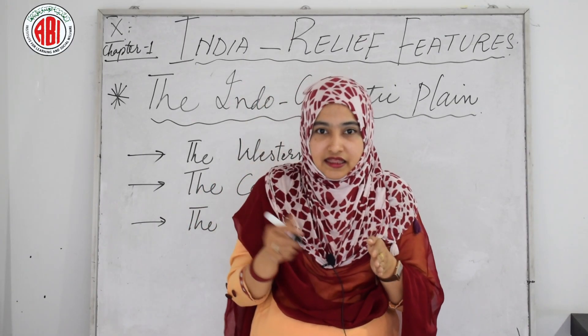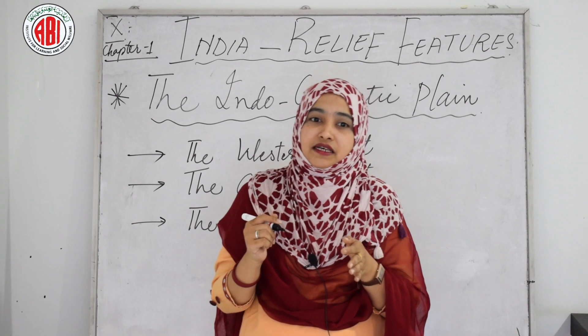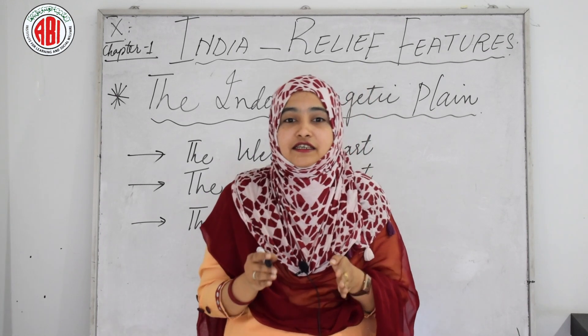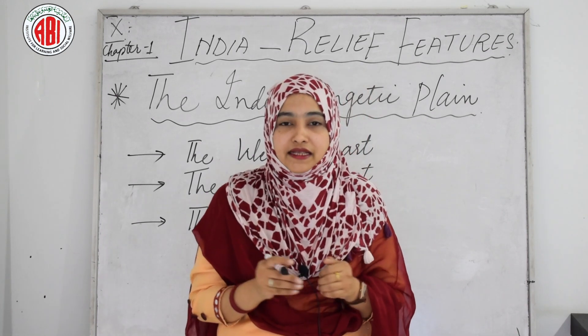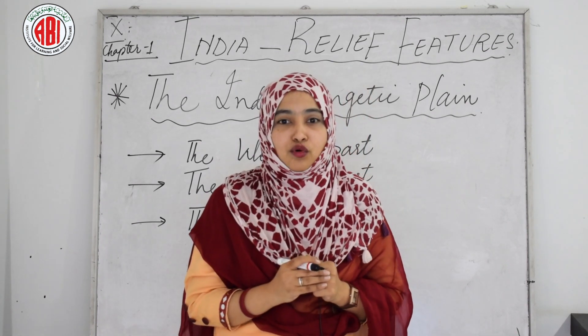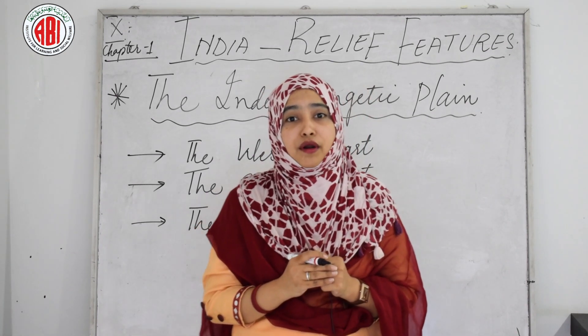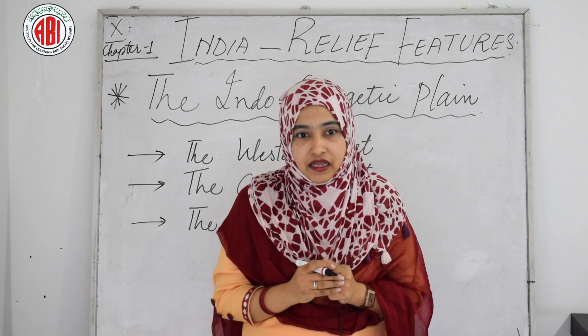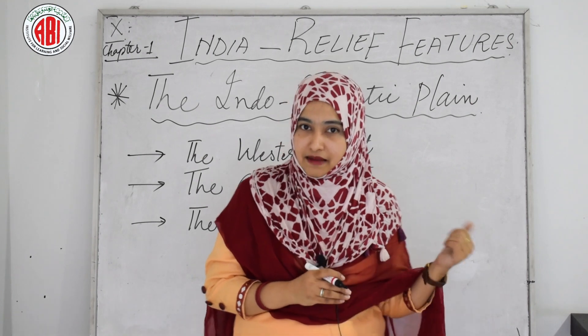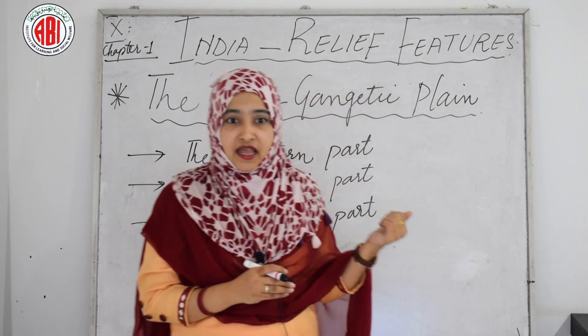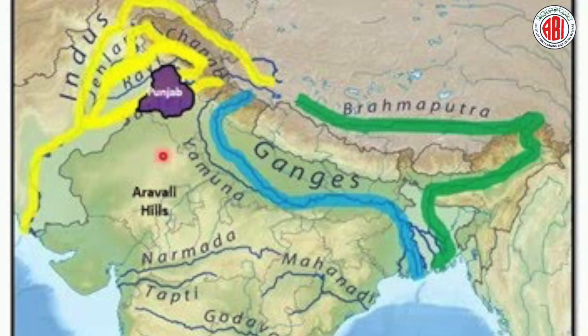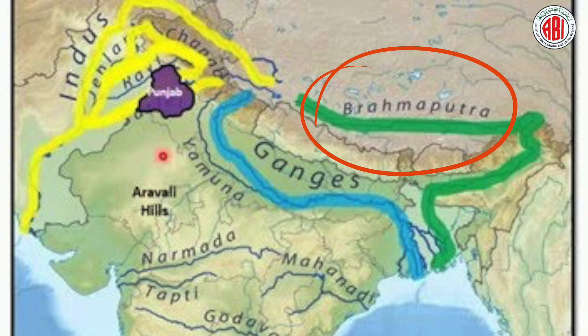The eastern part of the plains exists mostly in the Brahmaputra valley of Assam, and the river Brahmaputra is mainly responsible for its formation.